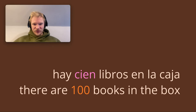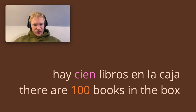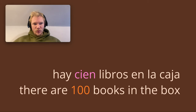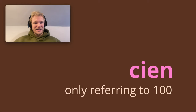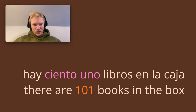Let's look at some examples to make this crystal clear. For cien: "Hay cien libros en la caja" — there are 100 books in the box. It's cien here because it's just the number 100. It's not 101 or 158, it's just 100. So cien only when referring to exactly 100.